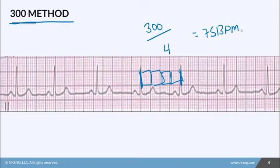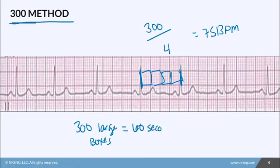Where does 300 come from? There are 300 large boxes in 60 seconds, and 60 seconds is one minute. That's why you divide 300 by the number of large boxes you count.